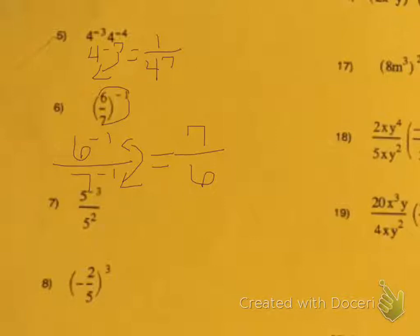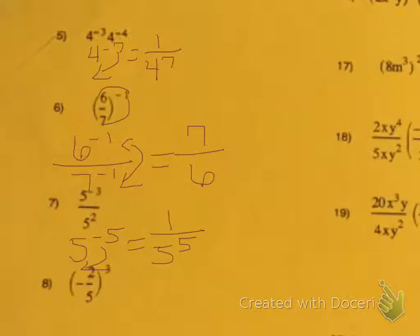Number 7, you're dividing, so you have to subtract the exponents. So you're going to keep the base of 5, then you have negative 3 minus 2, which gives you negative 5. Now we have to use another rule because that's a negative exponent, so we need to move all of this down, and we get 1 over 5 to the power of positive 5.